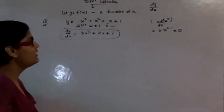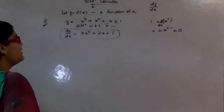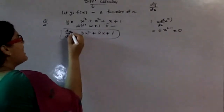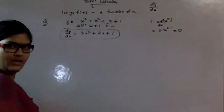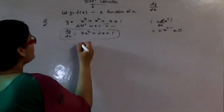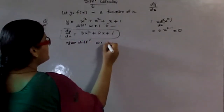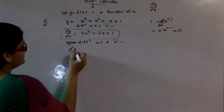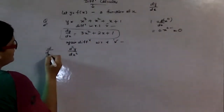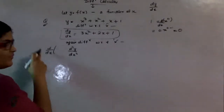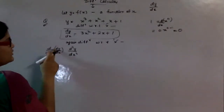This is what we have done in first-order differentiation. Now we are talking about what is order and what is degree. As we do differentiation only one time, the order is 1 here. Now if you again differentiate with respect to x, then d²y/dx² means differentiation of dy/dx — that is, differentiating with respect to x once more.